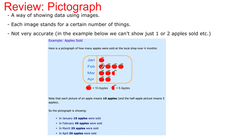So you'll see 10 apples, 20 apples, but what if you want to depict 22 apples or 27 apples? You can't. You have 10 apples or 5 apples — you can't show just one or two. It gives you a general idea of what's going on, but it's not very accurate.